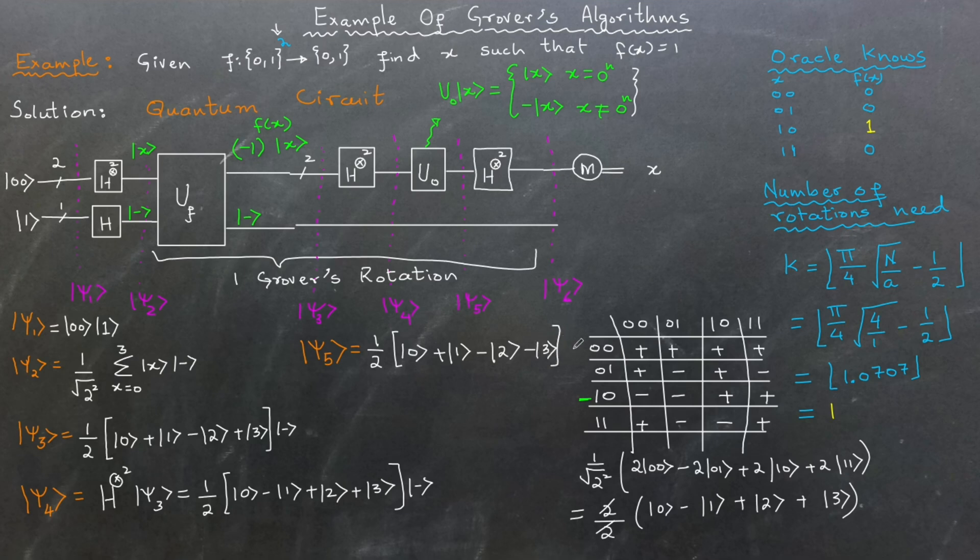Following this, we apply the Hadamard gates to the first register again to complete the diffusion operation. The result of these steps, or |ψ6⟩, is a quantum state where the first register collapses to |2⟩ with an amplitude of 1.